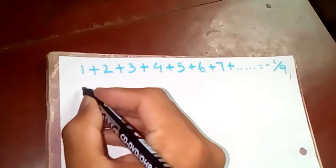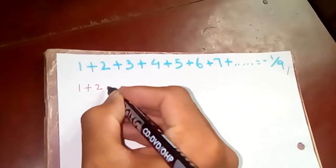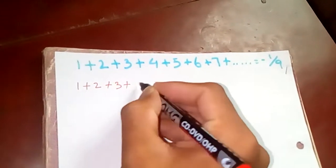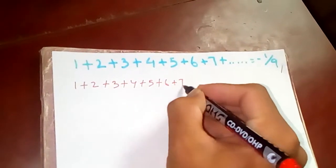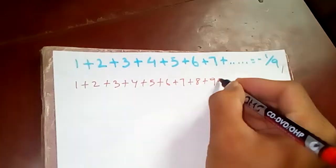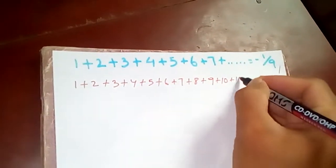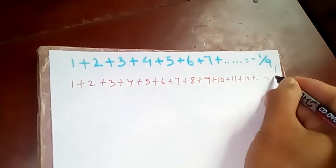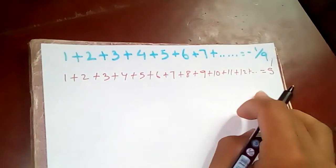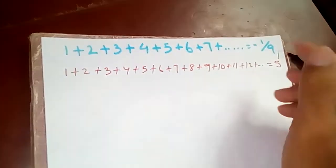First of all, let one plus two plus three plus four plus five plus six plus seven plus eight plus nine plus ten plus eleven plus twelve and so on. Let's say this to be S. Okay, remember this series is nothing but our S.